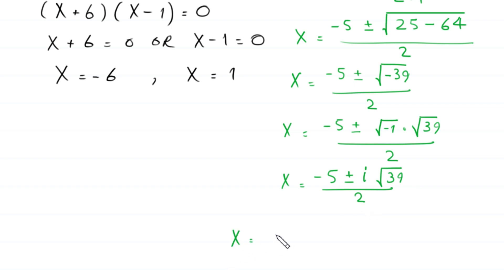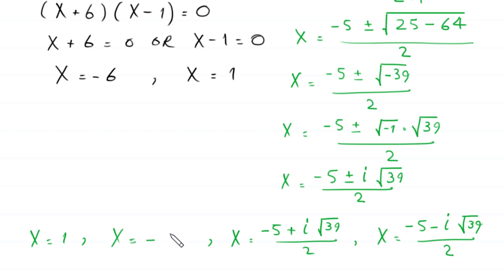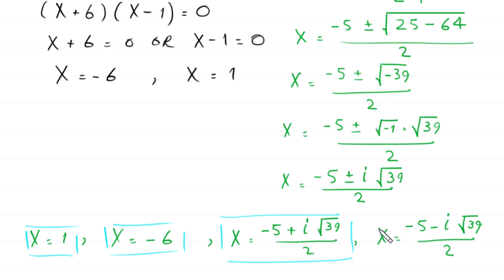So the other two values are x = (−5 + i√39)/2 and x = (−5 − i√39)/2. Combined with the earlier real solutions x = 1 and x = −6, we have all four solutions of this equation: 1, −6, (−5 + i√39)/2, and (−5 − i√39)/2.